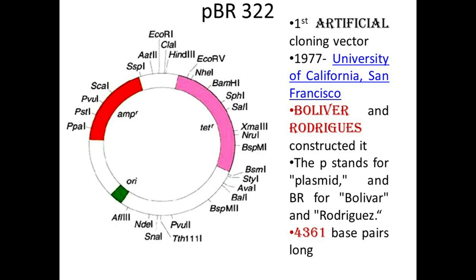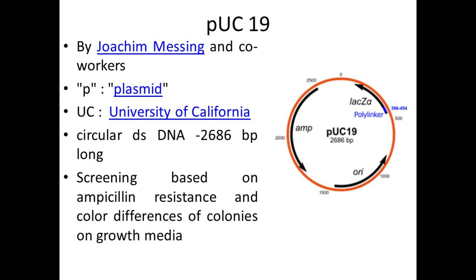Another important plasmid vector is PUC19 — also an artificial vector developed at the University of California, where P stands for plasmid, U for University, and C for California. The working principle is the same but screening is slightly different. That is the use of plasmids as vectors.